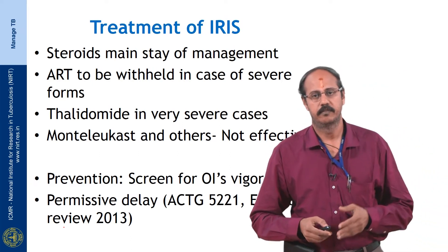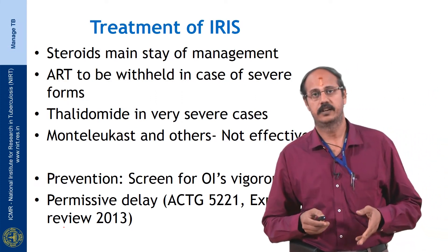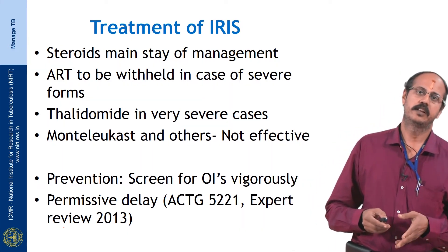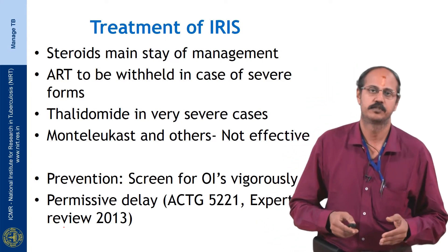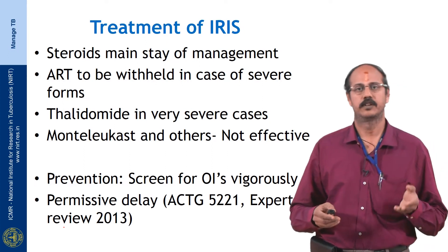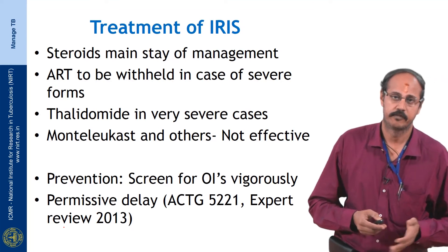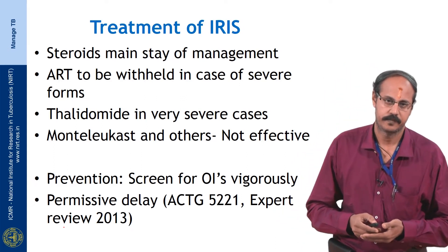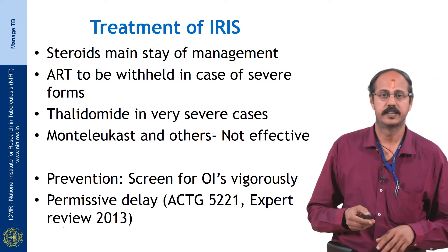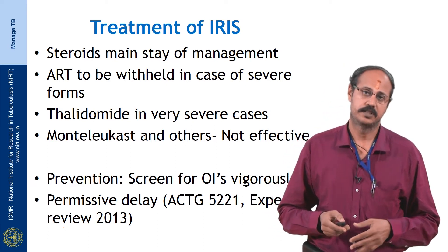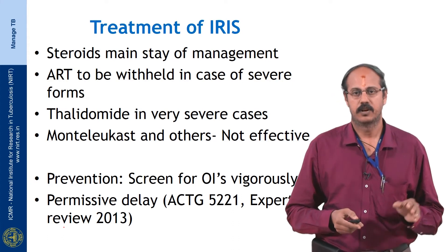For IRIS treatment, steroids remain the mainstay. The Indian population does not tolerate the internationally advocated dose of 2 mg/kg; we have found 0.5 to 1 mg/kg effective in ameliorating symptoms and signs of IRIS, especially in non-severe cases. Severe cases may require parenteral steroids such as hydrocortisone, methylprednisolone, or dexamethasone. Thalidomide is used in severe and steroid-dependent cases, except in women of fertile age. Stopping steroids prematurely can cause IRIS relapse. Studies have shown Montelukast is not effective in IRIS, and the CADIRIS trial confirmed Maraviroc has no role.